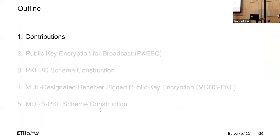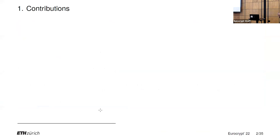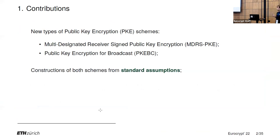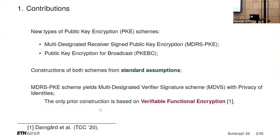In this paper we introduced two new types of public encryption schemes. The first one is as in the title and the second one is called PKE-BC, or public encryption for broadcast. We also give constructions of both of these schemes from standard assumptions. I would like to note that any MDRS-PKE scheme which satisfies anonymity yields a multi-designated verifier signature scheme, or MDVS, with privacy of identities. This means that we give the first MDVS scheme with privacy of identities from standard assumptions.